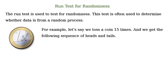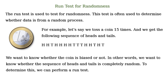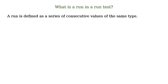For example, let's say we toss a coin 15 times and we get the following sequence of heads and tails. Now we want to know whether the coin is biased or not. In other words, we want to know whether the sequence of heads and tails is completely random. To determine this, we can perform a run test. Now let's understand what a run is. A run is defined as a series of consecutive values of the same type.